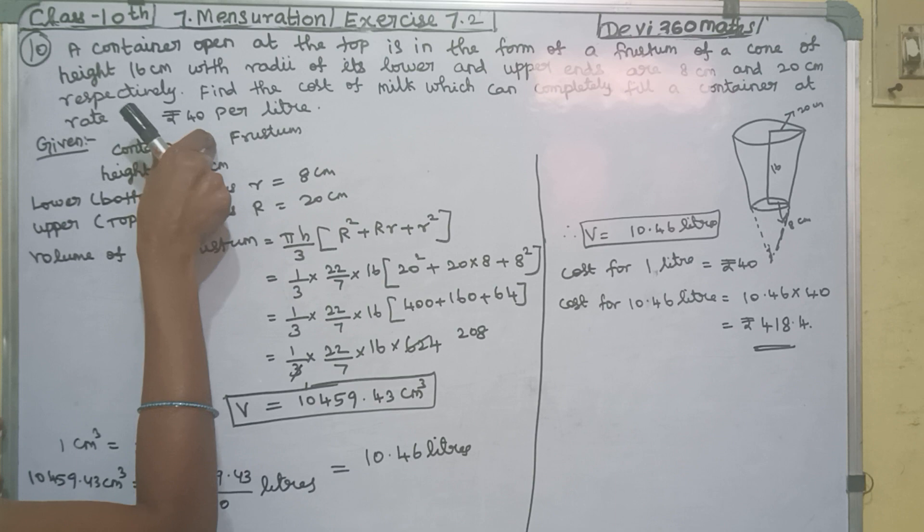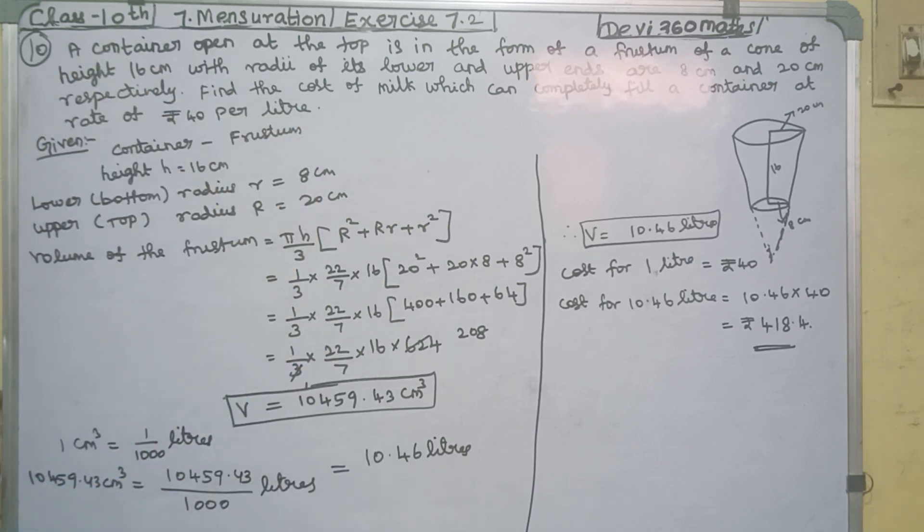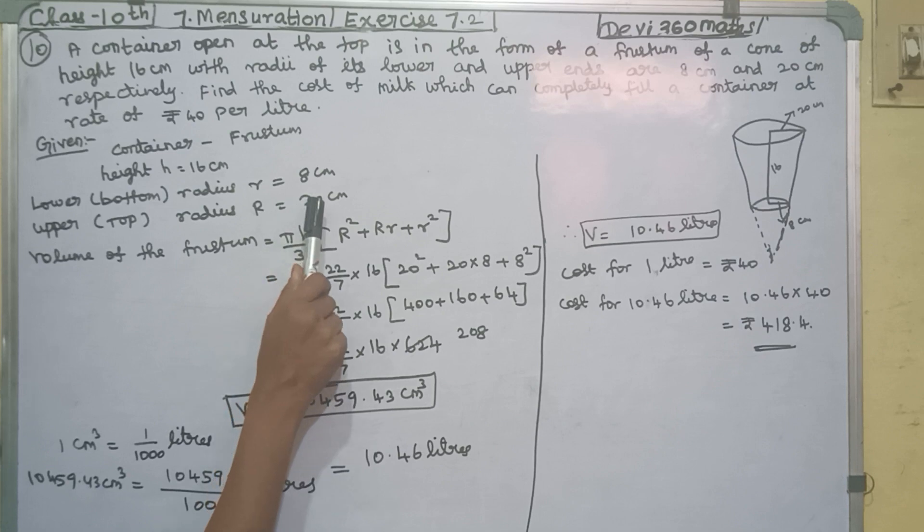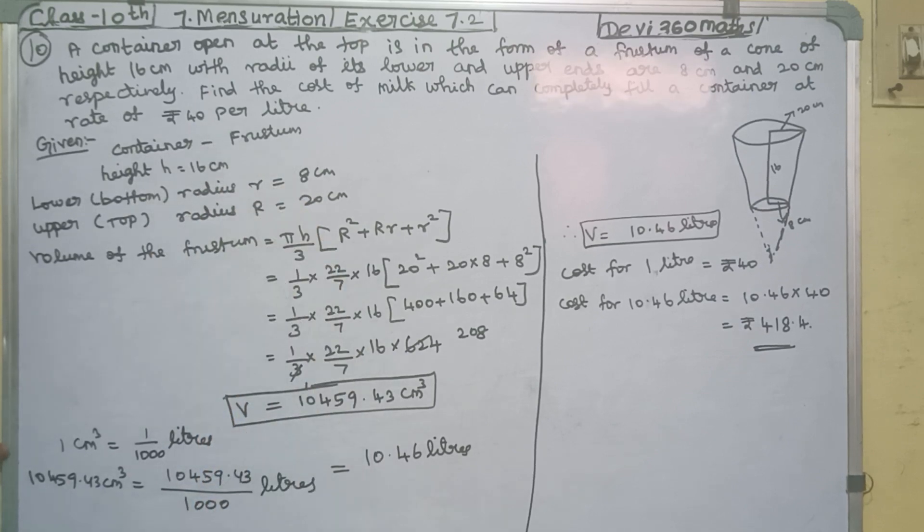The given container has a frustum shape. We have a lower radius, a bottom radius, and a top radius. Here is capital R, here is small r.